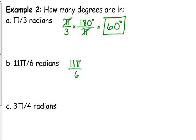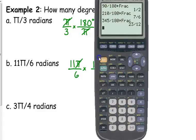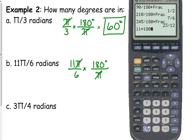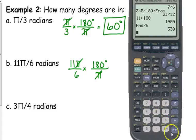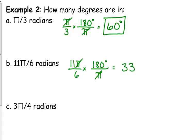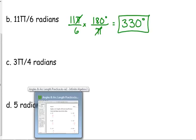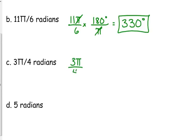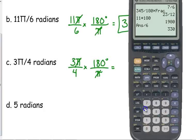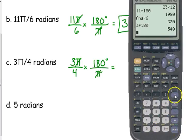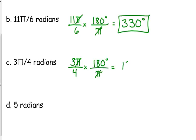11 pi over 6. So we're multiplying by 180 degrees over pi. The pi's cancel because the first one's in the numerator, the second one's in the denominator. So then we just multiply straight across the top, 11 times 180, and divide by what's on the bottom. So 11 times 180 is 1,980. We divide by 6, we get 330 degrees. 3 pi over 4. The pi's cancel. 3 times 180 is 540. 540 divided by 4 is 135 degrees.